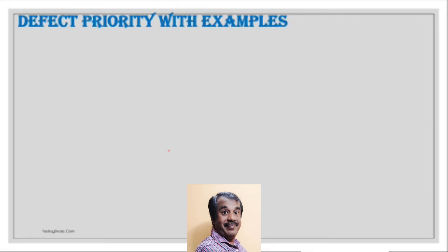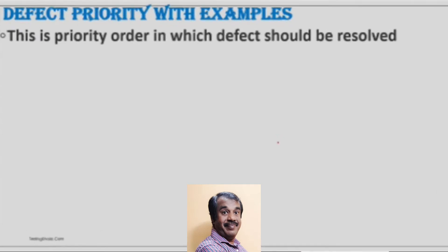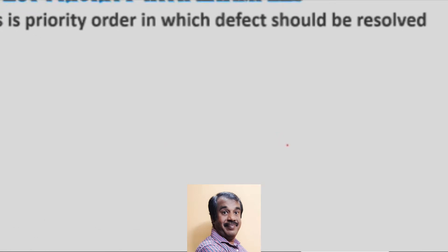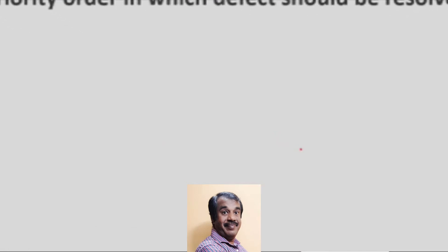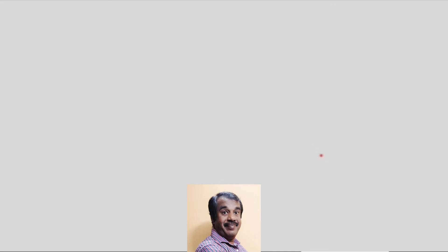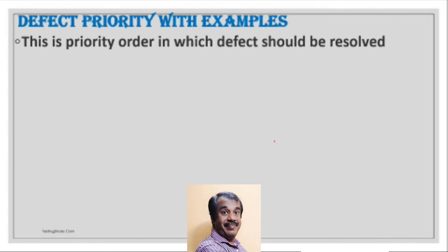Defect priority refers to the order in which a tester logs a particular defect, indicating the urgency with which the testing team expects the defect to be resolved.